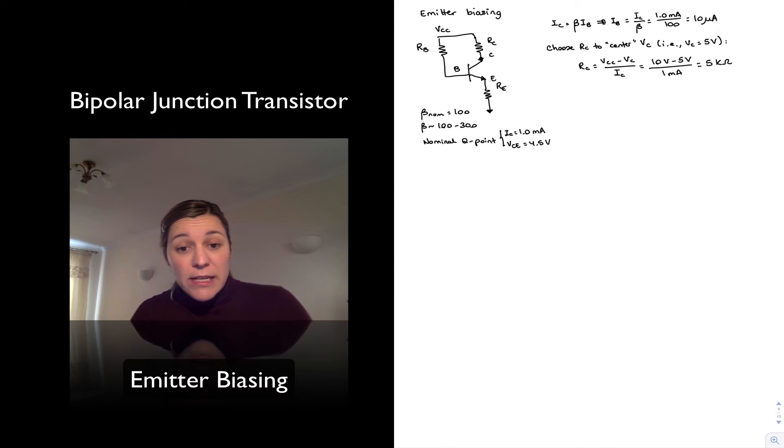Now I need to select the value of RE. And again, since I want my VCE to be equal to 4.5 volts, if I just set my VC equal to 5 volts, and I want VCE to be 4.5 volts,